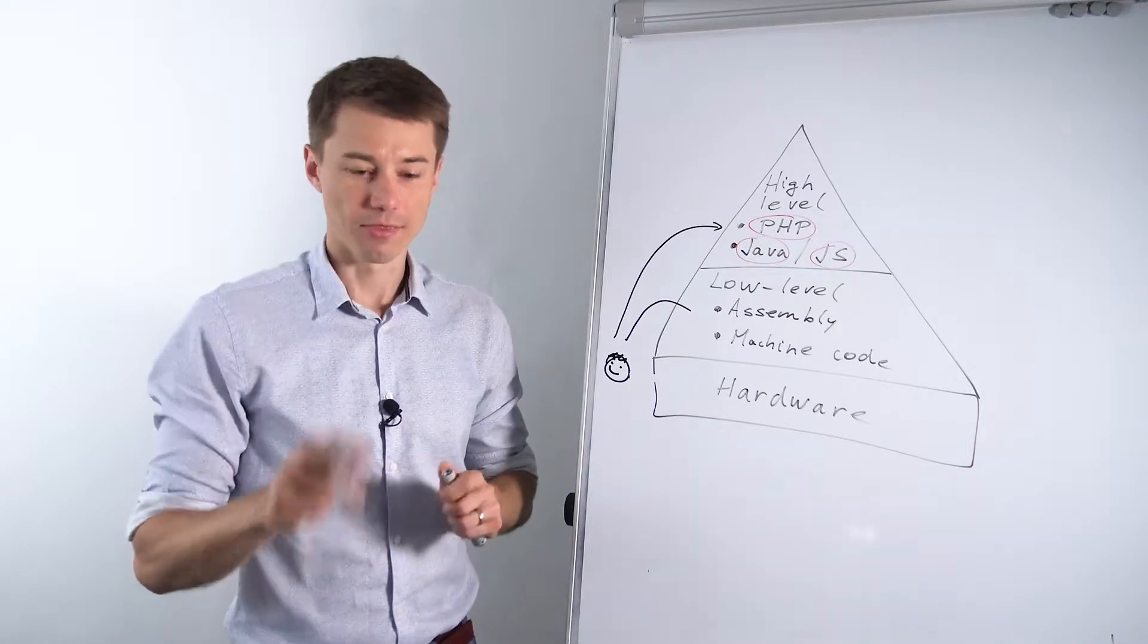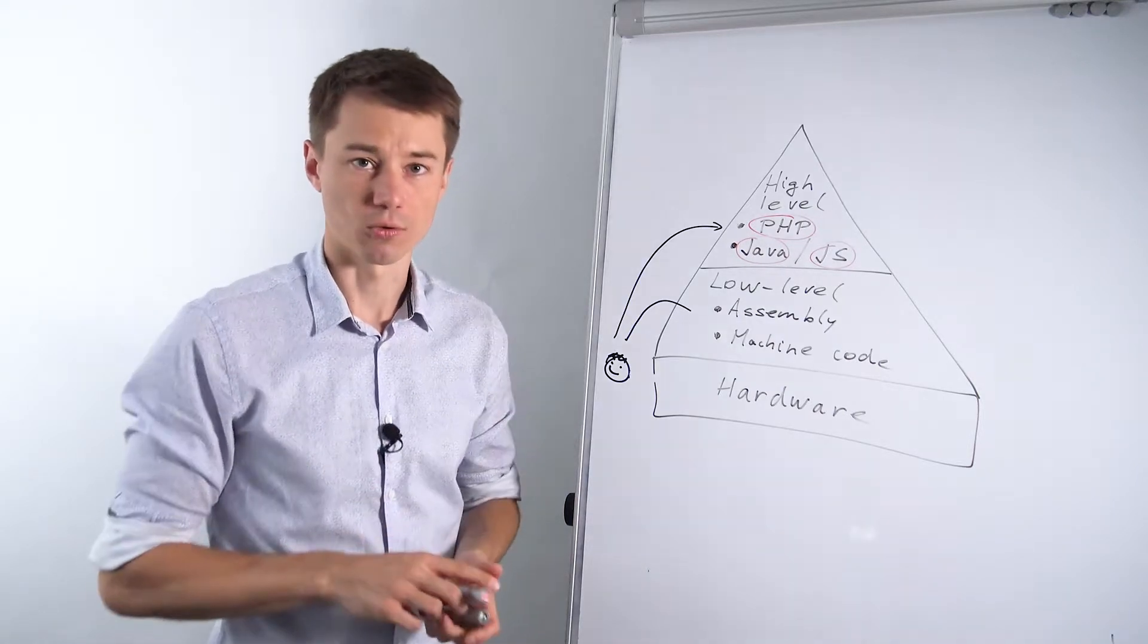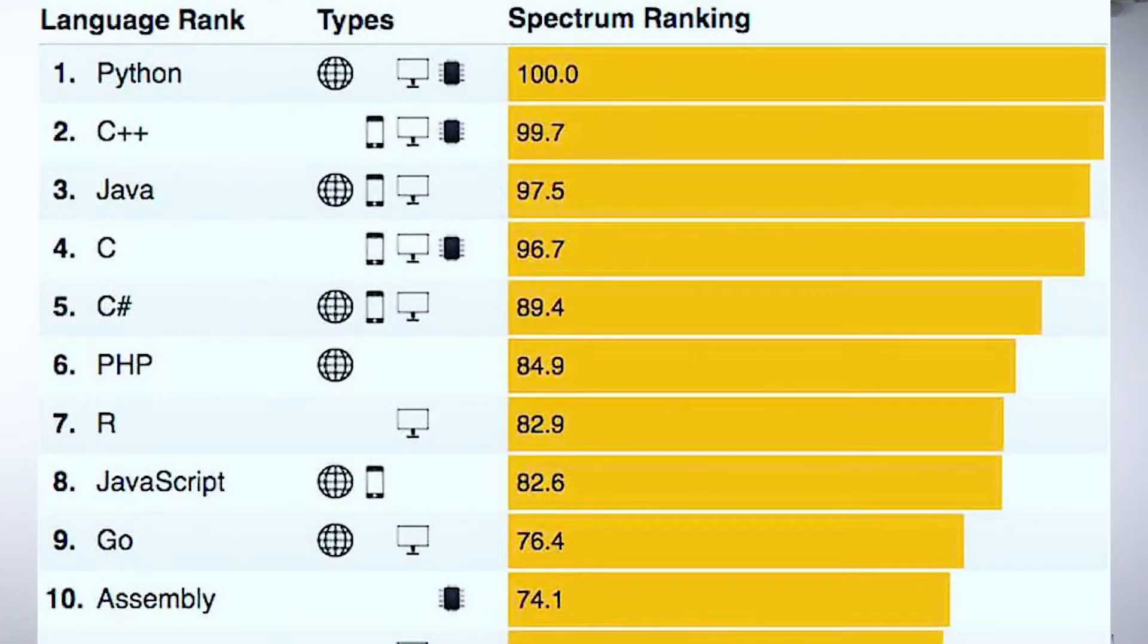We look at the top programming languages right now. Here we can see for example that Python is ranked as the most popular language, followed by C, Java, C++. There are lots of different comparisons; this is just one of many. What is actually more important here is the list of these languages. So you can see on this image here.